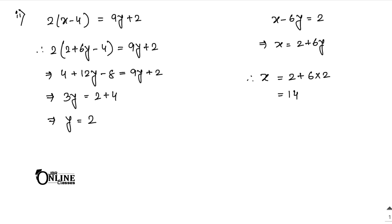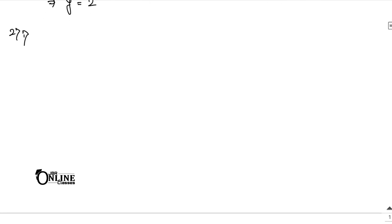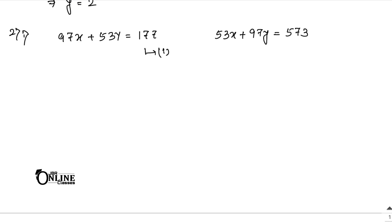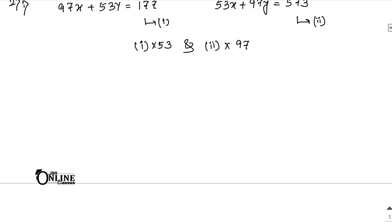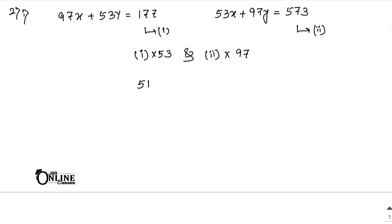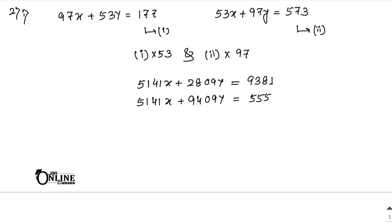Problem 2.1: 97x plus 53y equals 177, and 53x plus 97y equals 573. Multiply equation 1 by 53 and equation 2 by 97 to eliminate x. This gives 5141x plus 2809y equals 9381, and 5141x plus 9409y equals 55581.